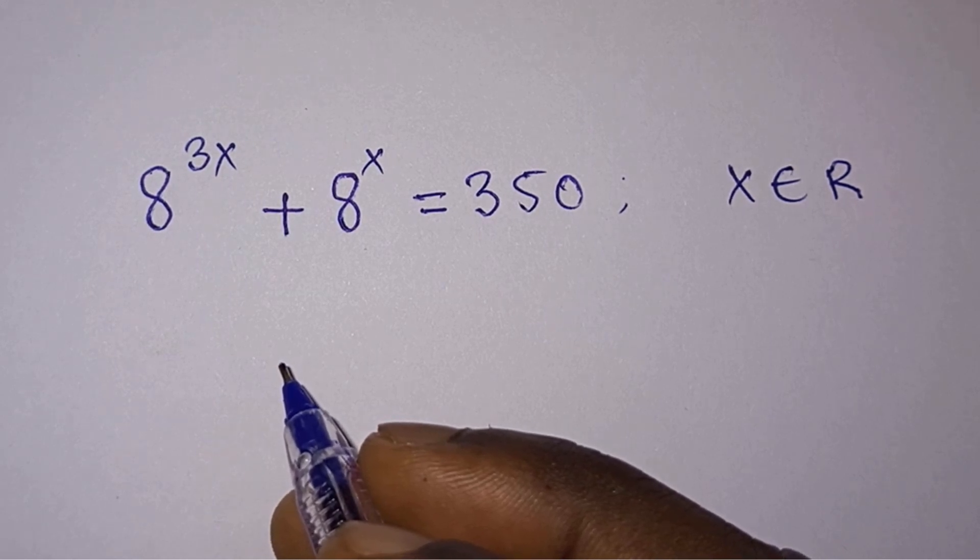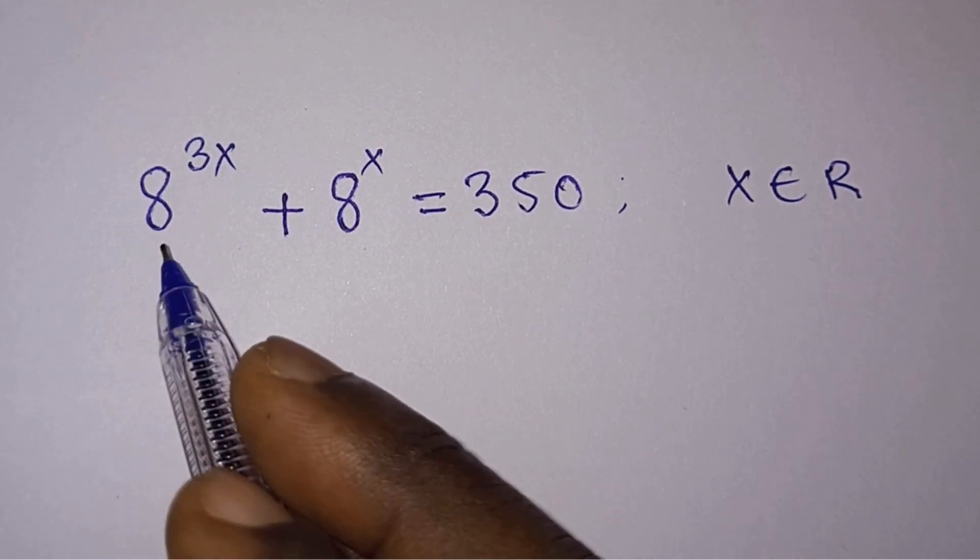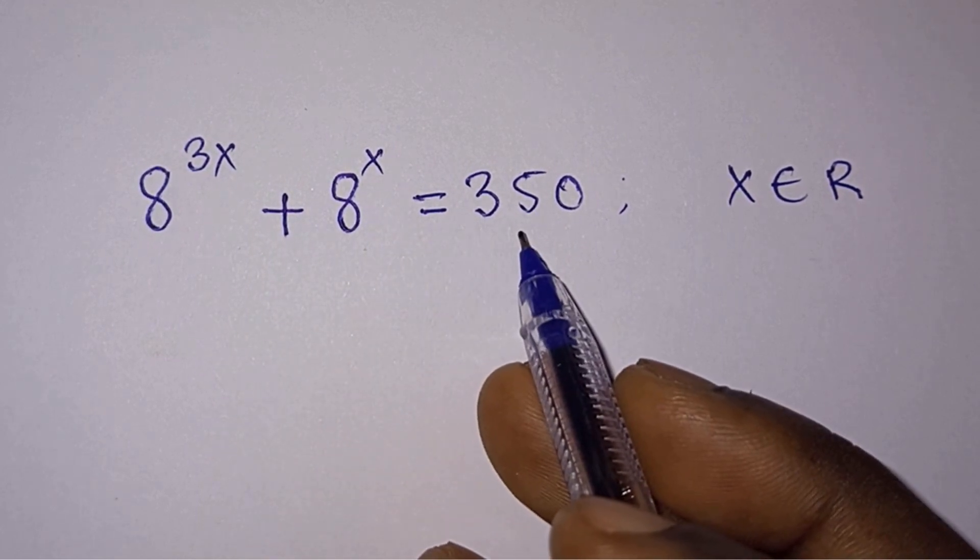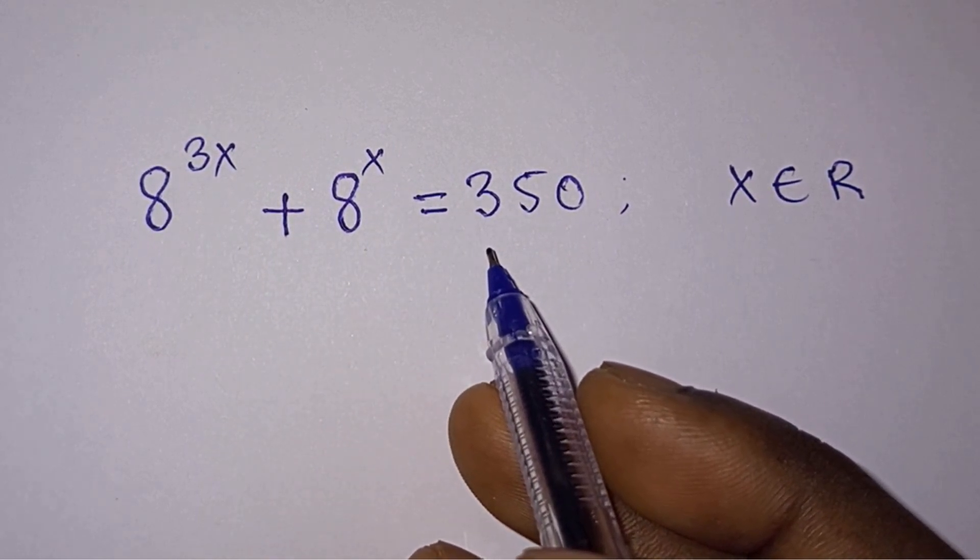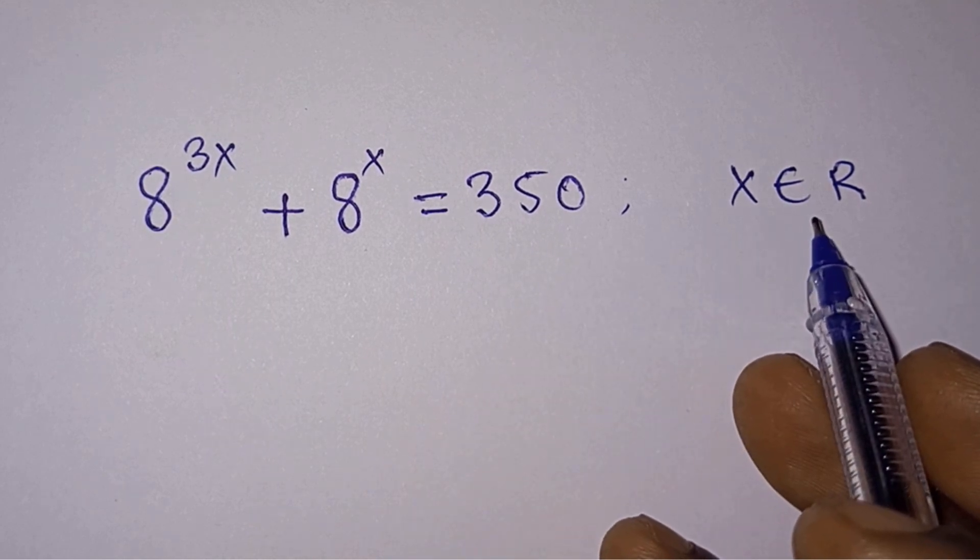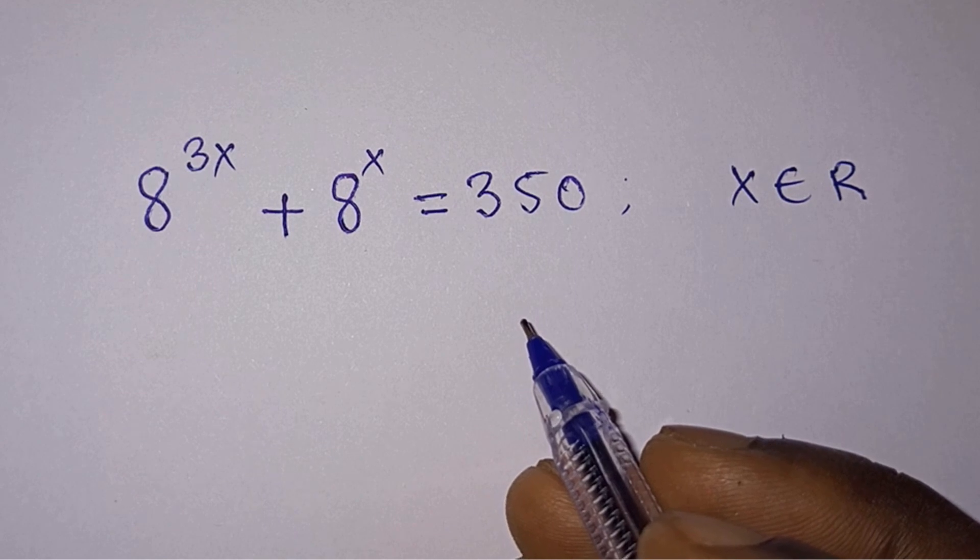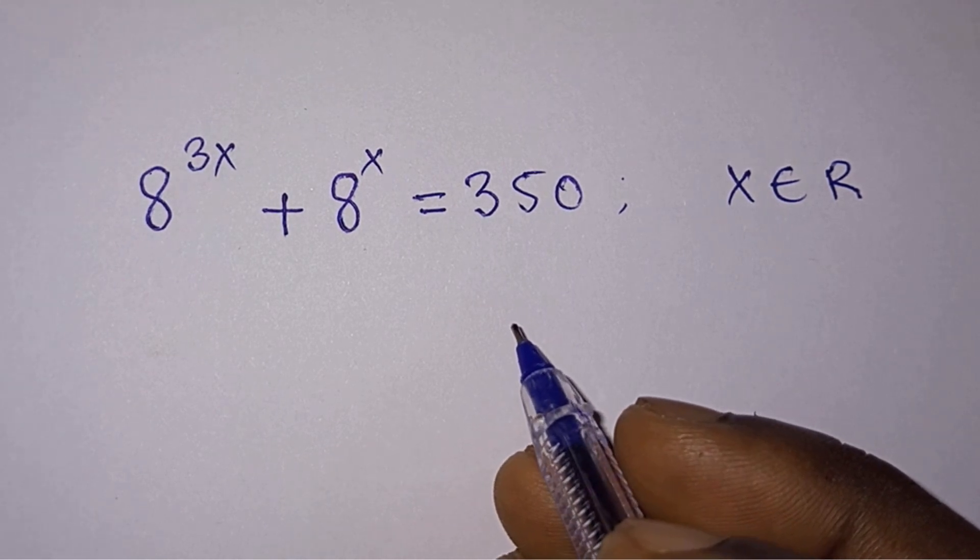Hello everyone, in this video we have this interesting problem. We have 8 to the power 3x plus 8 to the power x is equal to 350, and we have to find the value of x where x is a real number.